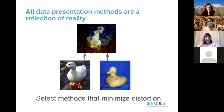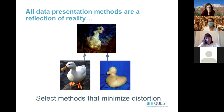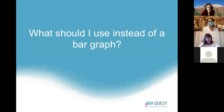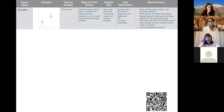All data presentation methods are a reflection of reality. Looking at data in a bar graph or line graph is like looking at a reflection in a wavy pond — it looks like a duck, but maybe it's an oddly shaped potato. No one wants to spend time and resources pursuing something they thought was a duck only to find out it wasn't. It's important to select methods that minimize distortion.